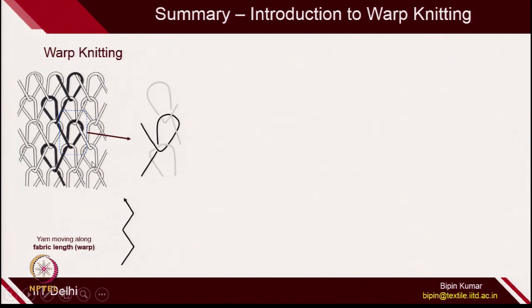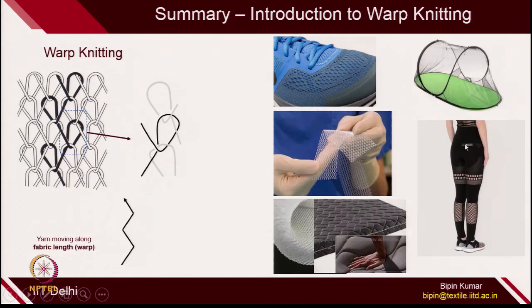Let us do a quick recap of what we covered in the last lecture. We have seen how loops are connected in warp knitted structures. The yarn follows the length direction — that is why it is called warp knitting. Each loop is connected with different courses in the structure, making it less extensible but highly porous compared to weft knitted structures. It can be used in many technical applications: medical mesh fabric for hernia, shoe knitting, mosquito net fabrics, cushioning applications, and garmenting.